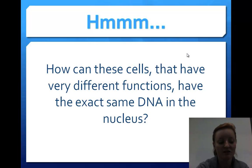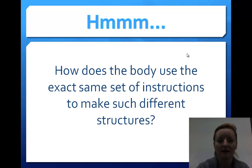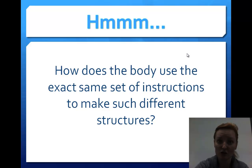The first thing I want you to think about is: how can cells that have very different functions have the exact same DNA in the nucleus? And how does the cell or the body use the exact same set of instructions to make different structures? We're using the same blueprint and making different things — how does that work?